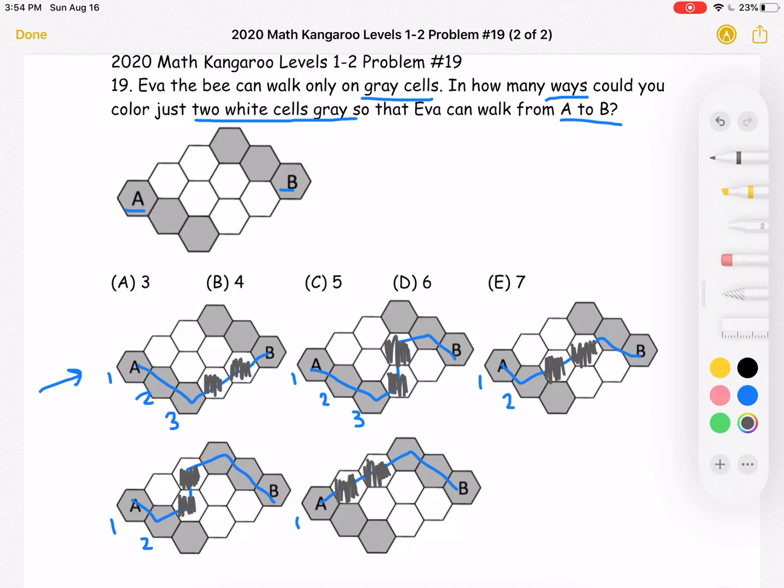So as we can see, we have one, two, three, four, five different pairs of white cells that we color gray, so that Eva can go from A to B. So this is answer choice C.